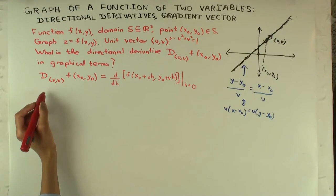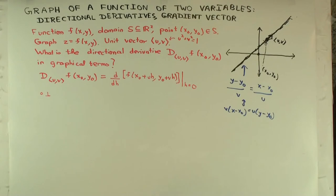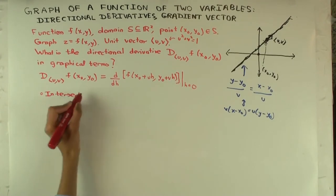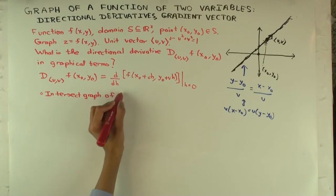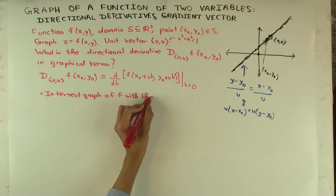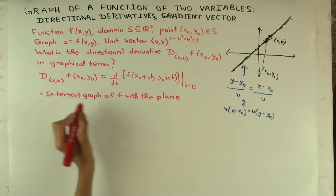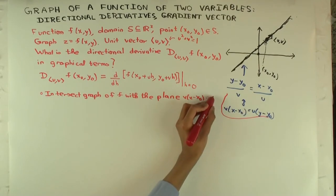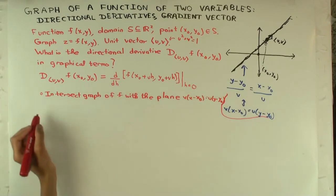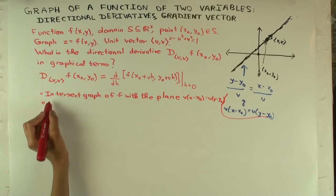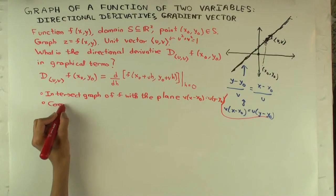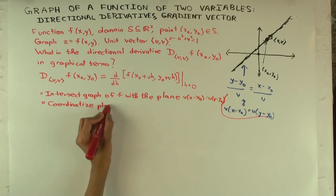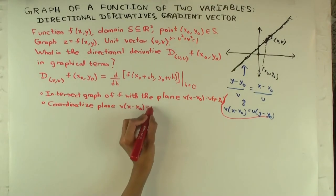So let me write that down. So what is the first step? Intersect a plane. Intersect with the plane, this plane. With the plane, I'll just rewrite it: v(x - x₀) = u(y - y₀). What next? Now coordinate the intersection. Coordinate this plane: v(x - x₀) = u(y - y₀).